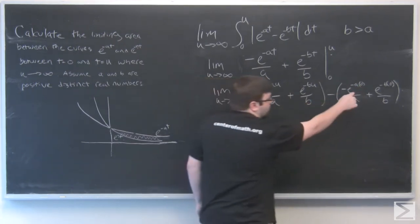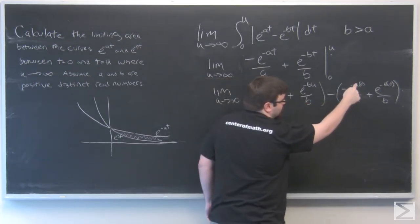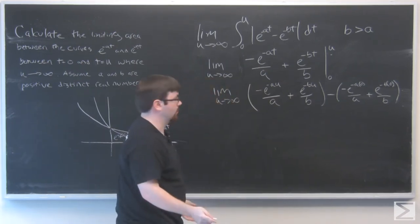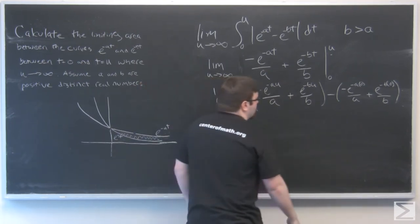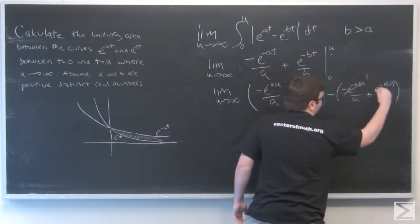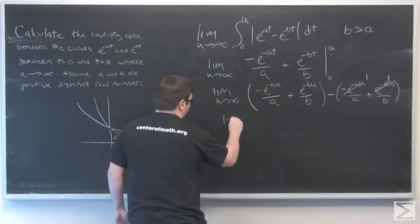And we know that this is going to simplify. E to the negative a times zero is just going to be e to the zero, which is going to be one.